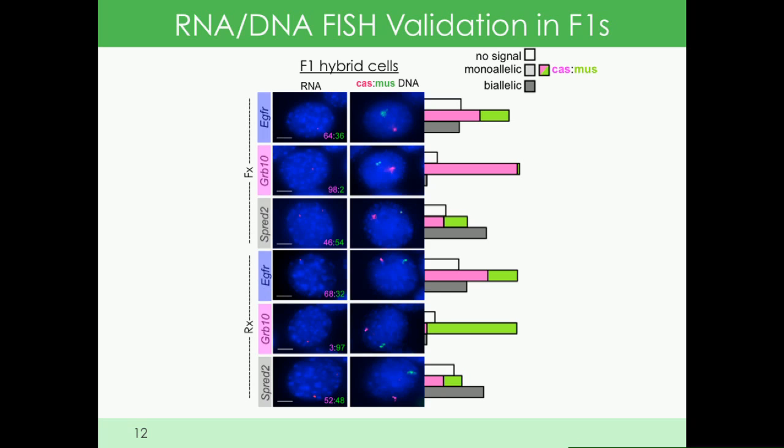Sprr2D is a biallelic control showing a 50-50 split. EGFR shows a preference for the castaneus allele at the transcription level that matched nicely what we saw in sequencing of steady-state levels.